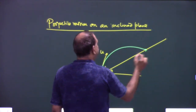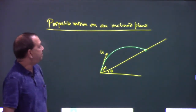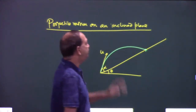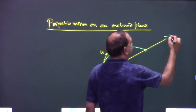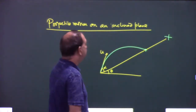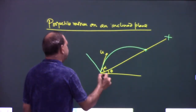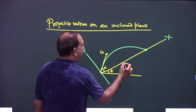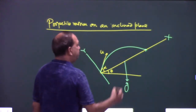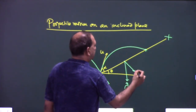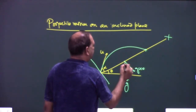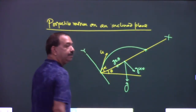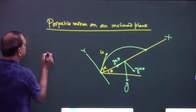You need not to do anything special. Take this x-axis, take this y-axis. This is your g, g cosθ, g sinθ. Use ay.